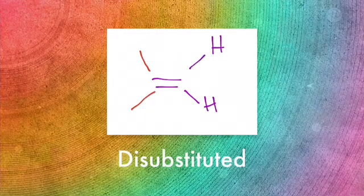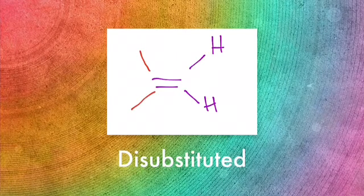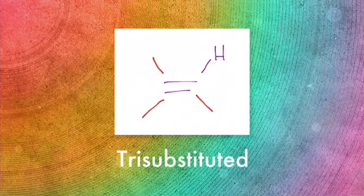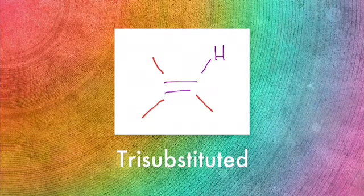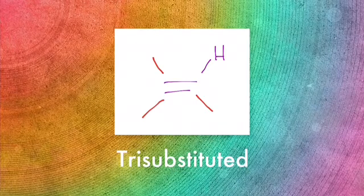This is followed by a disubstituted alkene, which has two hydrogens and two substituents that are not hydrogens. Next is a trisubstituted alkene, which has only one group or substituent that is a hydrogen and three groups that are not hydrogens.